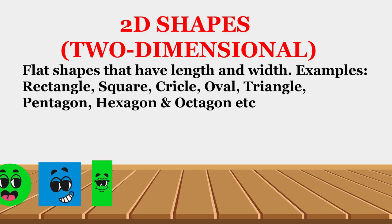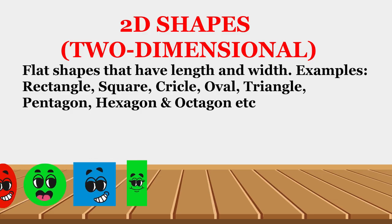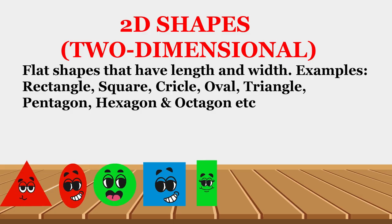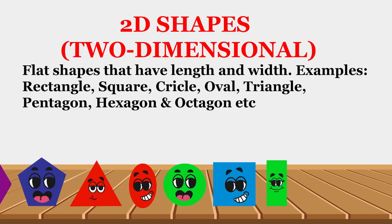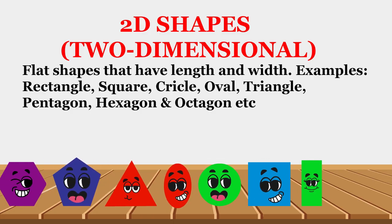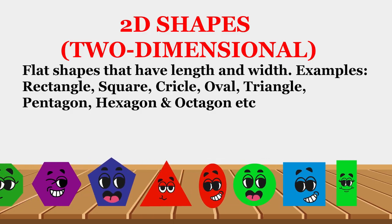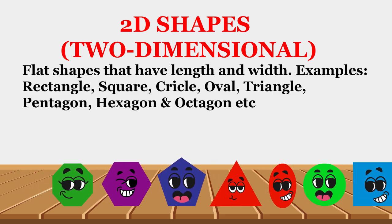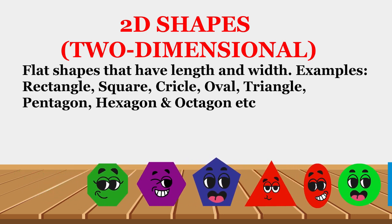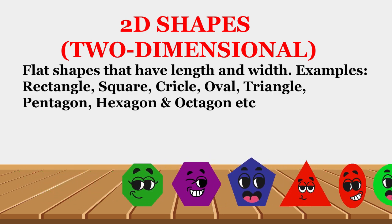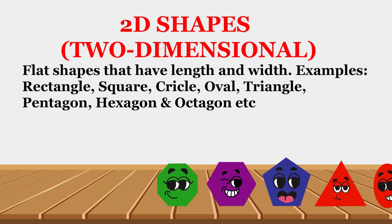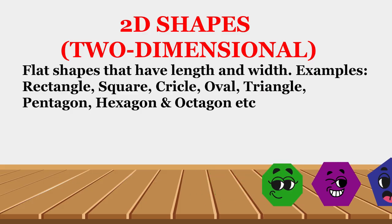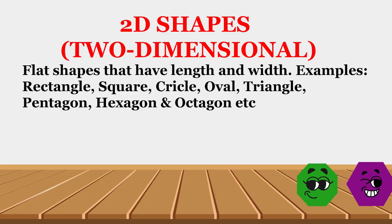2D shapes are two-dimensional flat shapes that have length and width. Examples include Rectangle, Square, Circle, Oval, Triangle, Pentagon, Hexagon, Octagon, etc.